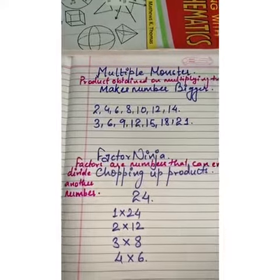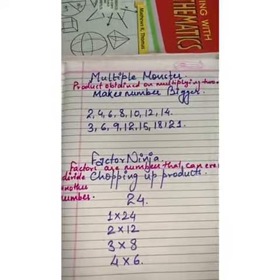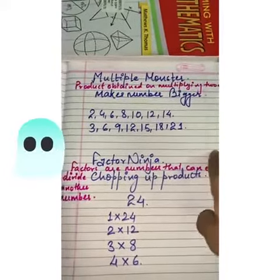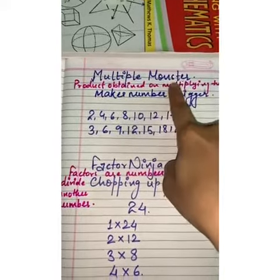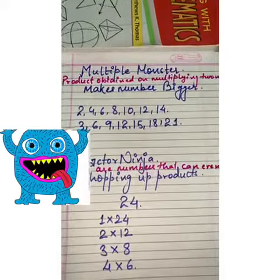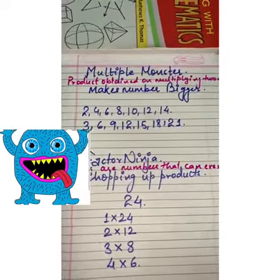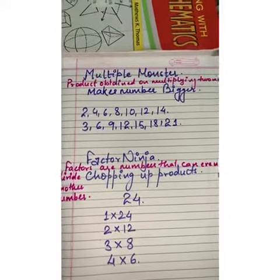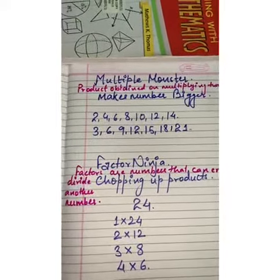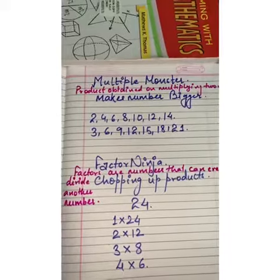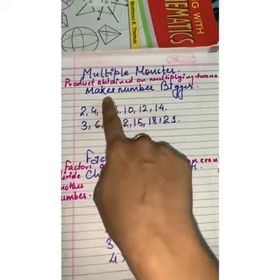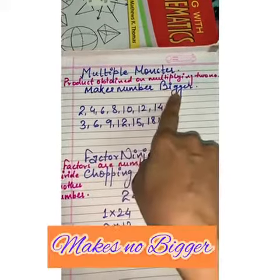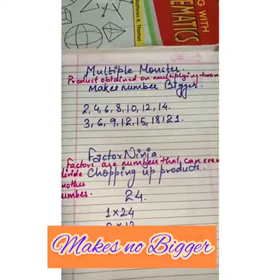Now, you will say, ma'am, why you have written here multiple monster? Because, to understand that, multiple monster, monster means, monster kya hota hai? Woh monster, joh doosro ko khata hai, aur apne aap ko badaata hai, right? So, multiple bhi yehi karta hai. Multiple kya karta hai? Doosre numbers se multiply karta hai, aur apne aap ko makes number bigger, aur bada number badaata hai.